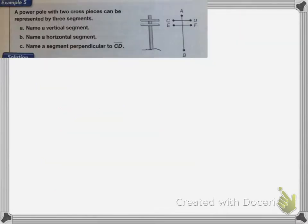Alright. And this last problem is the power pole of two cross pieces can be represented by three segments. It wants us to name a vertical segment, a horizontal segment, and a segment perpendicular to CD. Vertical means that it's going up and down. So the vertical segment is going to be AB with a segment line over it. Or you could write that of course as BA.